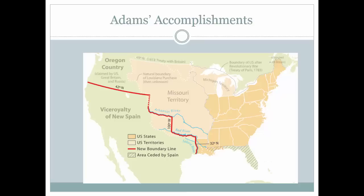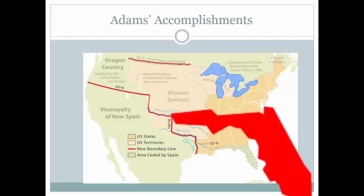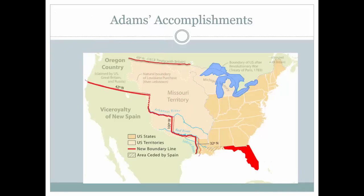In his first year as Secretary of State, John Quincy Adams negotiated with Britain to demilitarize the Great Lakes. The next year, he negotiated with Britain again, this time to set the northern boundary of the Louisiana Purchased Lands at the 49th parallel, from the Great Lakes to the Rocky Mountains. The year after that, which was 1819, he concluded a treaty with Spain that gave the United States all of Florida and set the western boundary of the Louisiana Purchased Lands.